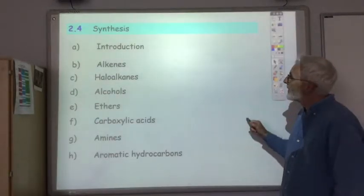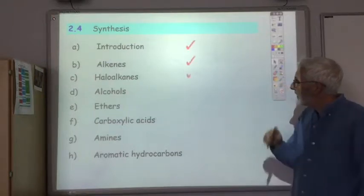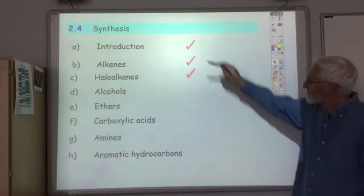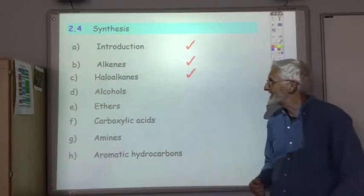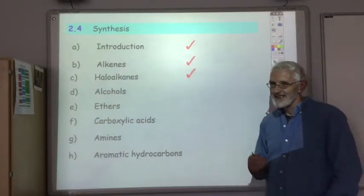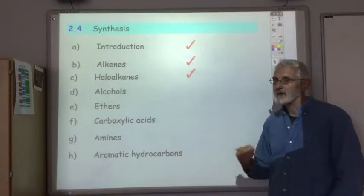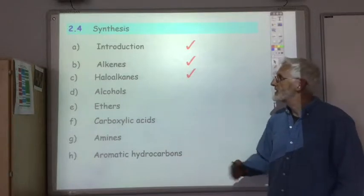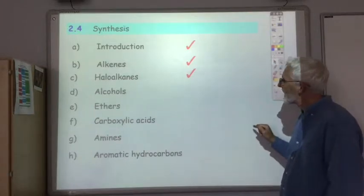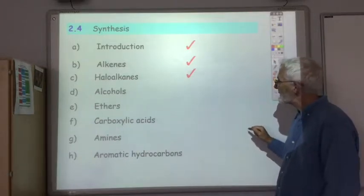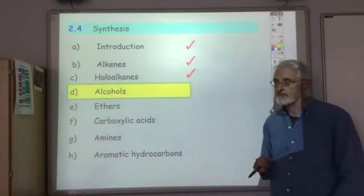So far in section 2.4 we have covered the introduction, the alkenes and the haloalkanes. The alkenes and the haloalkanes are by far and away the two biggest sections — they get a bit smaller from here on in. And 2.4D is going to be on alcohols.